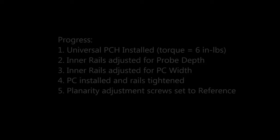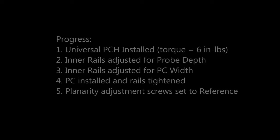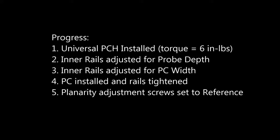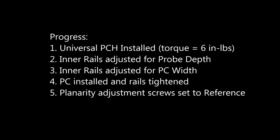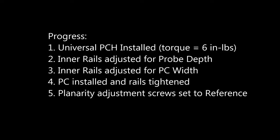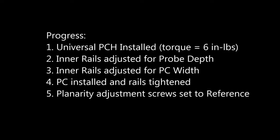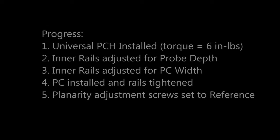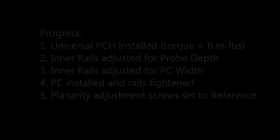So let's review. The probe card holder has been installed into the platen opening. The outer rails are secured to the platen with a torque of six inch pounds. The inner rails have been adjusted to the appropriate height and adjusted for the width of our card. The probe card has been installed, centered in the contact view window and secured into place. And lastly, we set the starting position of the planarity adjustment set screws.